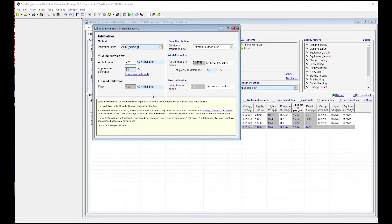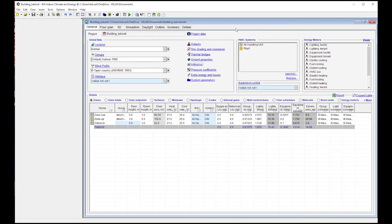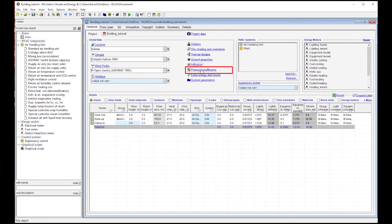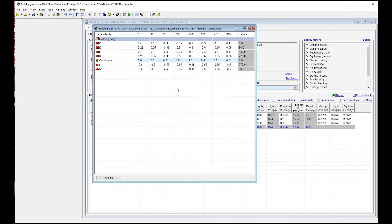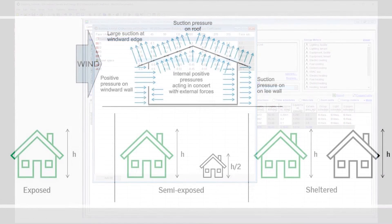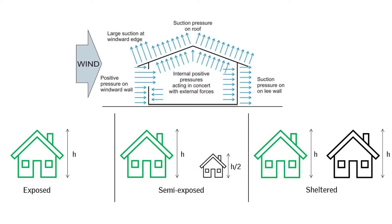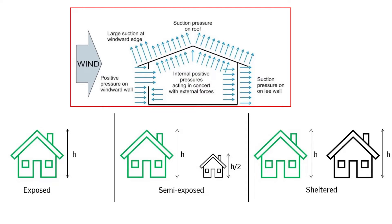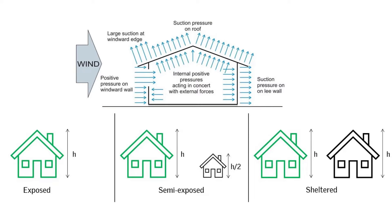After having specified the wind profile and the leakiness of the building, we need to define the pressure difference between indoors and outdoors through the immediate surroundings of the building. We will introduce the most relevant input – the pressure coefficients. Without them, the airflow through the building is not realistically calculated. When the wind blows in one direction, it causes positive pressure on the exposed wall, called the windward wall, and negative pressure on the opposite wall, the leeward wall. The pressure coefficients represent this effect, which depends on the building orientation, layout, and how exposed the building is to wind.